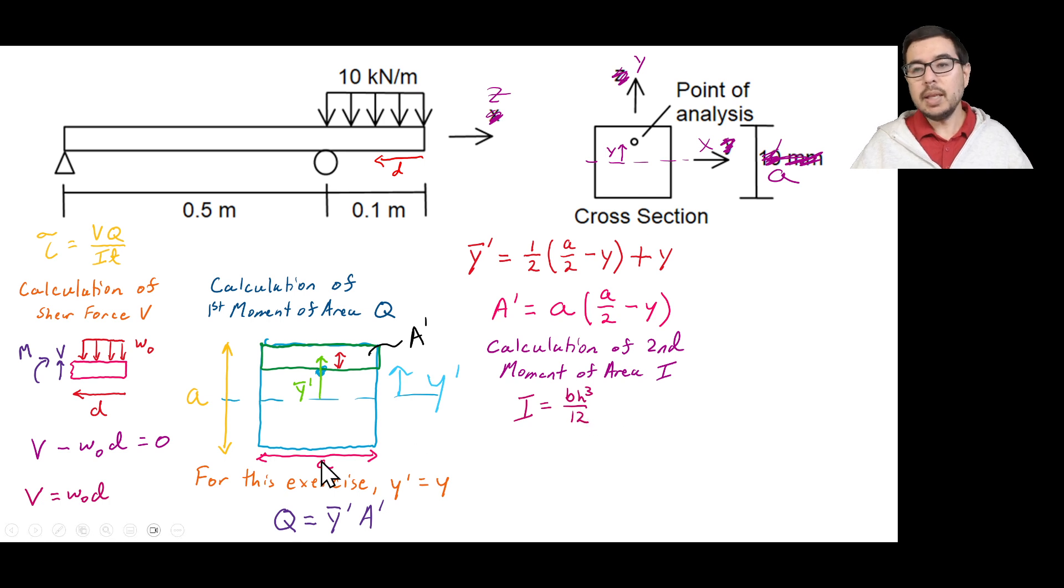h is the height. And for this problem, we just have that the b and the h are the same. They're a, so it becomes a to the 4th over 12.